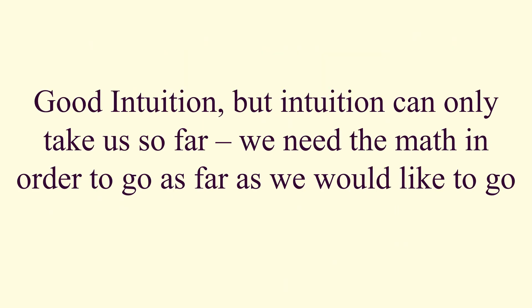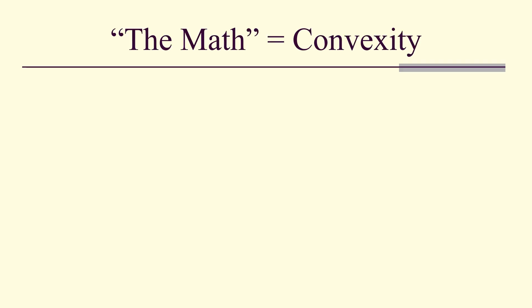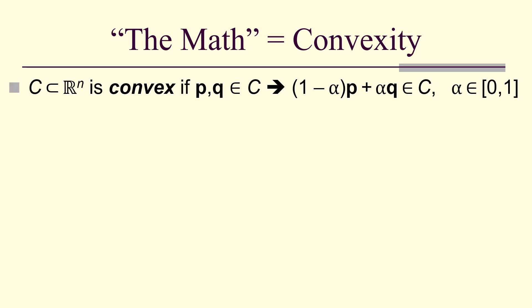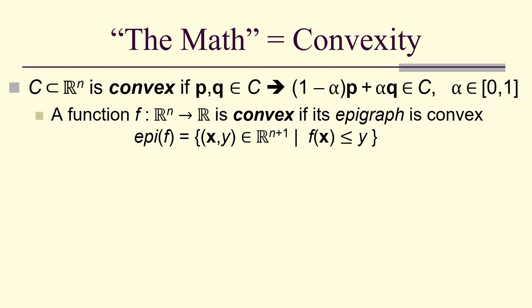We can only go so far with intuition — let's look at the math. The math is convexity. A set C, a subset of R^n, is convex if two points p, q in C imply the line segment between them — (1 minus alpha)p plus alpha q — is also in C, where alpha is in [0, 1]. A function is convex if its epigraph is convex. The epigraph is the set of points in R^(n+1) for which f of x is less than or equal to y.